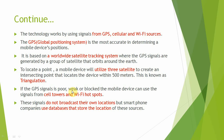If the GPS signal is weak or blocked, the mobile device can use signals from cell towers and Wi-Fi hotspots. However, these signals do not broadcast their own location. Instead, smartphone companies use databases that store the location of these sources.